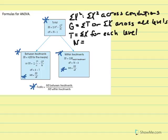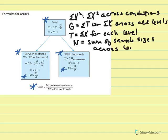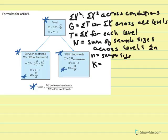Capital N is equal to the sum of sample sizes across all levels — the total number of observations or participants in the study. Lowercase n is equal to sample size. K is a new variable referring to the number of levels, or how many samples we are working with for the independent or quasi-independent variable.